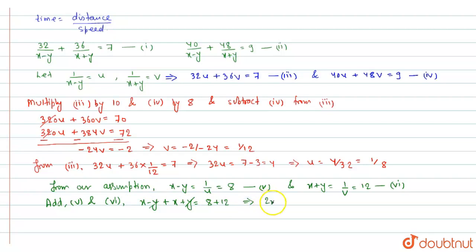We get 2x is equal to 20 or x is equal to 10. From equation 5, 10 minus y is equal to 8, we get y is equal to 10 minus 8 that is 2.